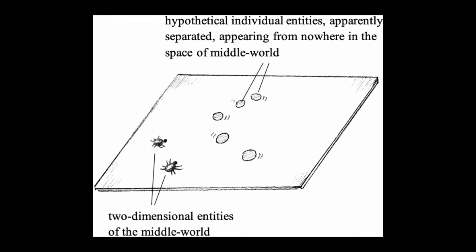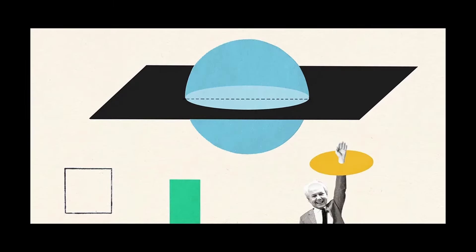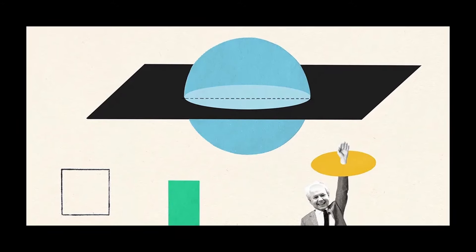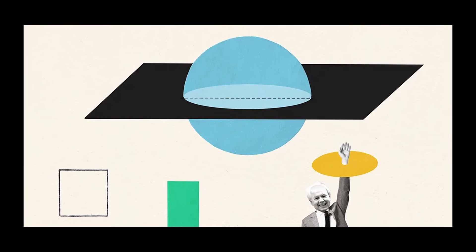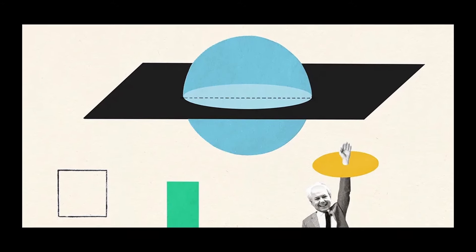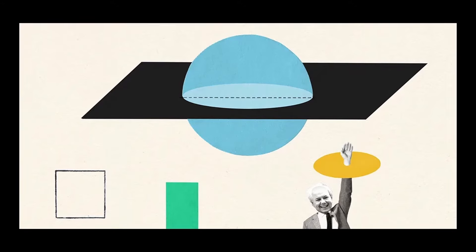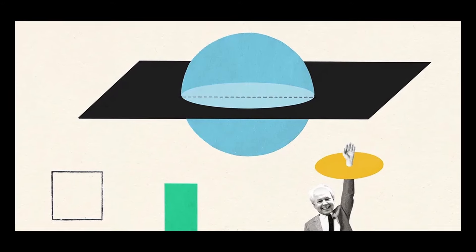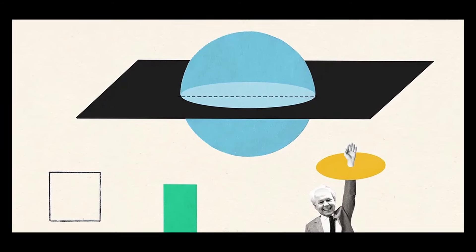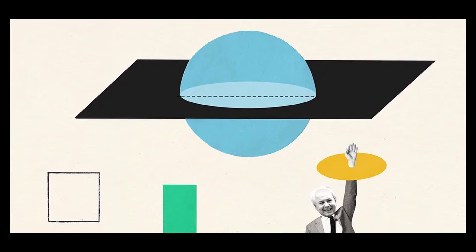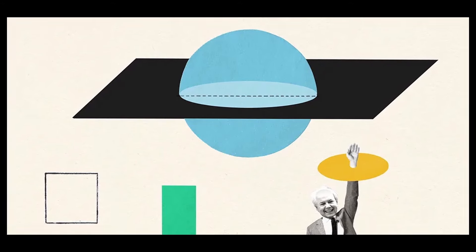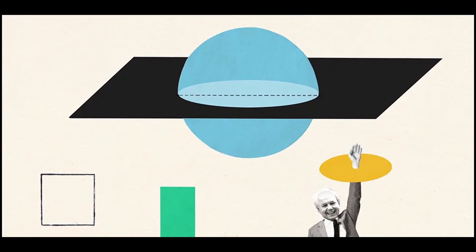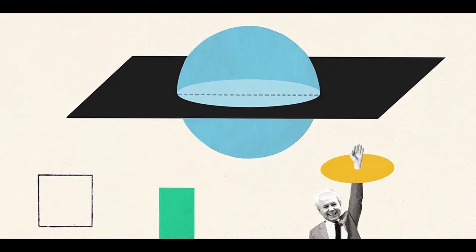Just as a three-dimensional sphere passing through a two-dimensional plane would appear to change size and shape, a four-dimensional object passing through our space might exhibit similarly bizarre behavior. Supporters of this theory point to the sudden appearances, disappearances, and apparent shape-shifting abilities often reported in UFO sightings as evidence of higher dimensional interactions.